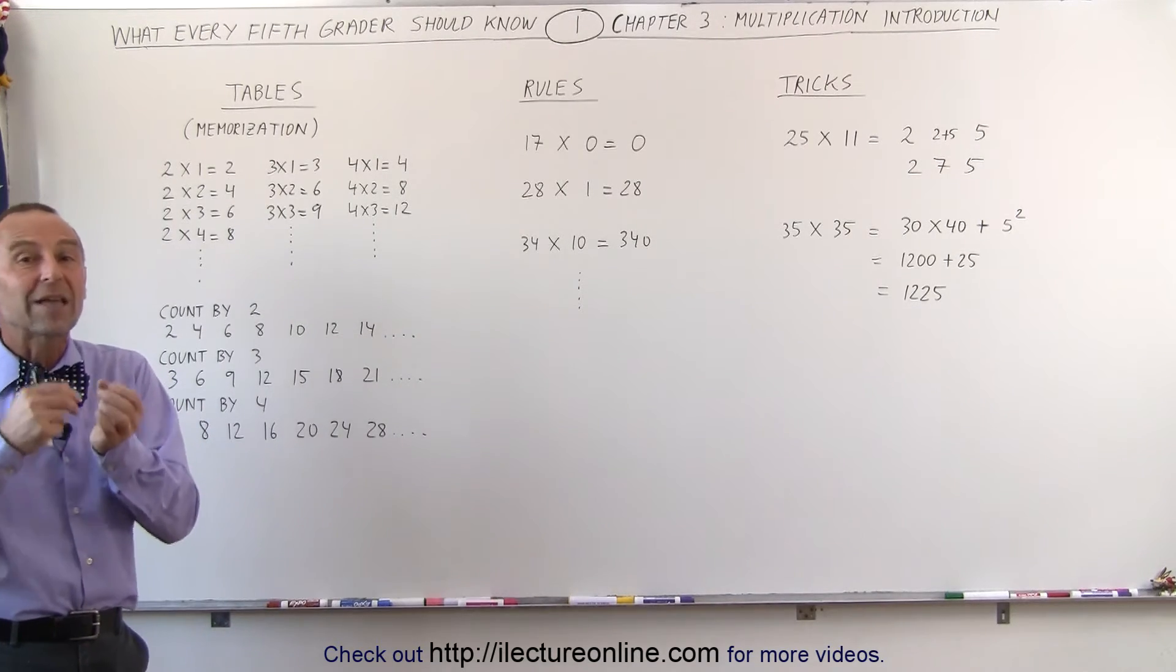Then you move on to counting by 3. You go 3, 6, 9, 12, 15. Then you go counting by 4, and then count by 5, and count by 6. It's another way to help you reinforce the memorization of the multiplication tables.